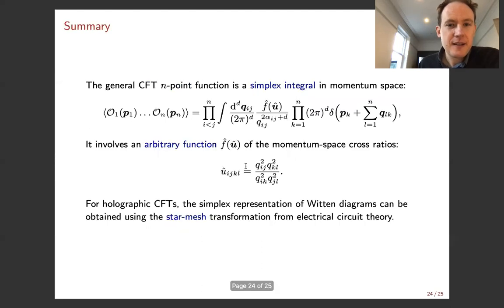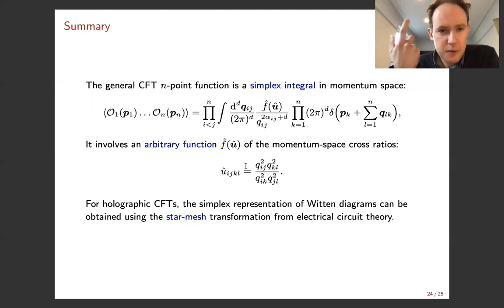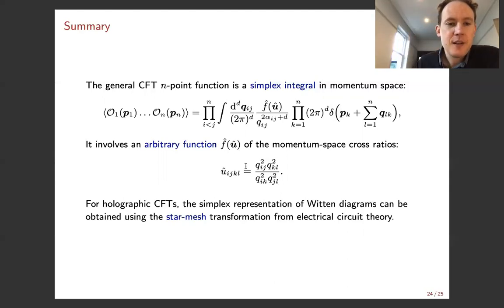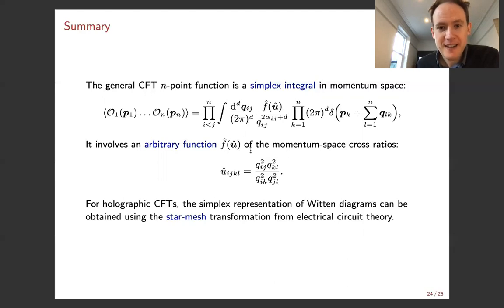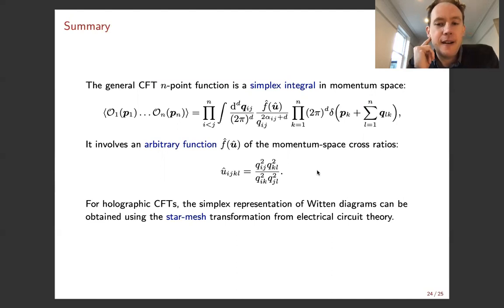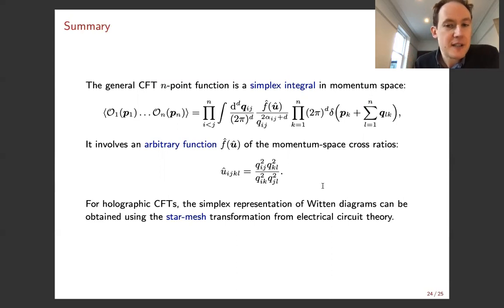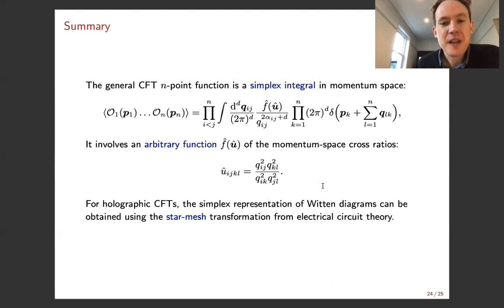To summarize: we found the general solution of the conformal Ward identities in momentum space for scalar correlators. The general CFT scalar n-point function can be written as a simplex integral involving an arbitrary function f̂ of the momentum space cross ratios — these play the same role as position space cross ratios, but are cross ratios of the momenta q_ij running along the legs of the simplex and subject to integration. For particular correlators of interest in holographic theories, we can use tricks from electrical circuit theory — the star-mesh transformation — to rewrite a contact diagram with star topology as a mesh integral with simplex topology.